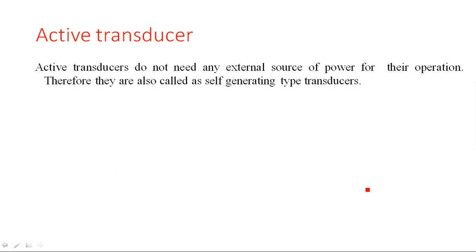Coming to active transducers — an active transducer does not need any external source of power for its operation. If a transducer needs an external power supply to operate, then it falls under passive transducers. But transducers which do not require any power supply to operate — they themselves provide some electrical parameter like voltage or current by applying a physical quantity without any external power supply — such transducers are known as active transducers.